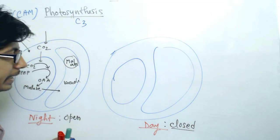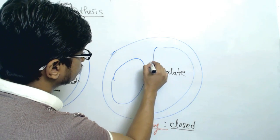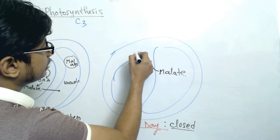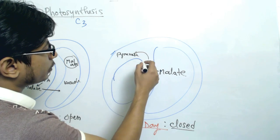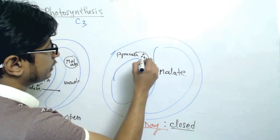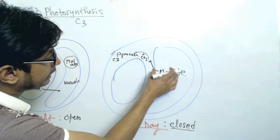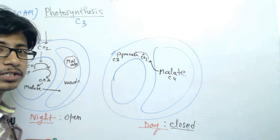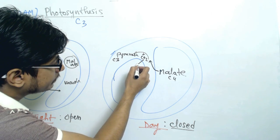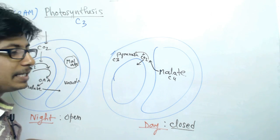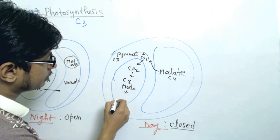Then what happens in the daytime? They take malate from the vacuole to the cytosol, and malate is converted to pyruvate. During this process carbon dioxide is released, because pyruvate is a three-carbon molecule while malate is a four-carbon molecule. Converting malate into pyruvate with the help of malate dehydrogenase enzyme releases carbon dioxide, which then enters the chloroplast and goes through the regular C3 mode to produce glucose.